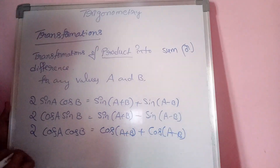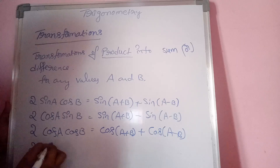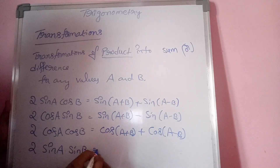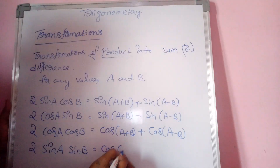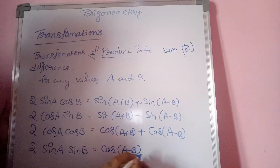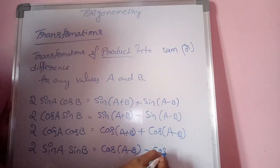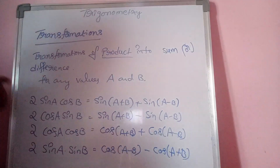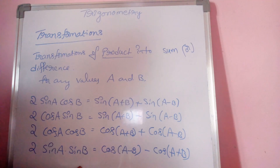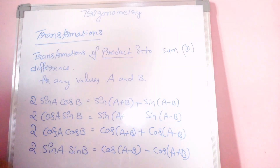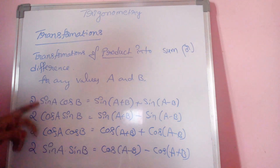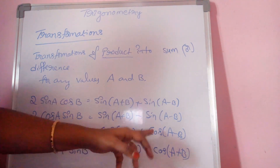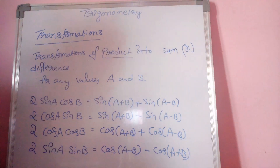The fourth formula: 2 sin A sin B is equal to cos(A−B) minus cos(A+B). These are the four important formulas to transform a product into the sum or difference of two trigonometric functions.